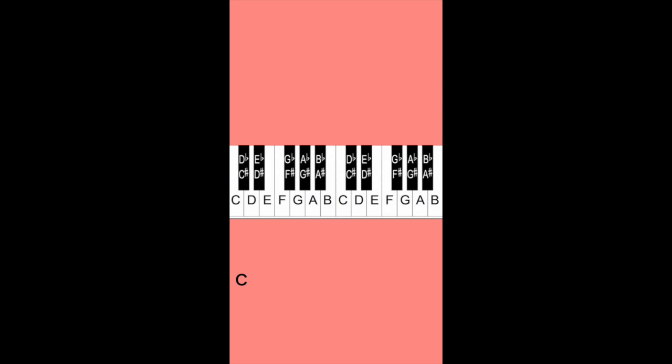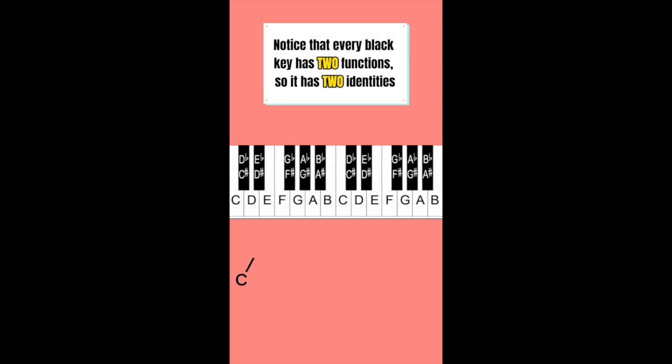By knowing that, you could name every natural key or white key on the piano. So let's look at the black keys, or the sharps and flats. These keys have two functions. They can sharpen a note, and they can flatten a note. Let's continue with the chromatic scale across the instrument.